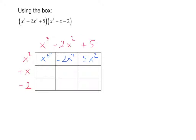Then x times x to the 3rd is x to the 4th power, x times negative 2x squared is negative 2x to the 3rd, and x times 5 is 5x. Lastly, negative 2 times x to the 3rd is negative 2x to the 3rd, negative 2 times negative 2x squared is 4x squared, and negative 2 times 5 gives me negative 10.